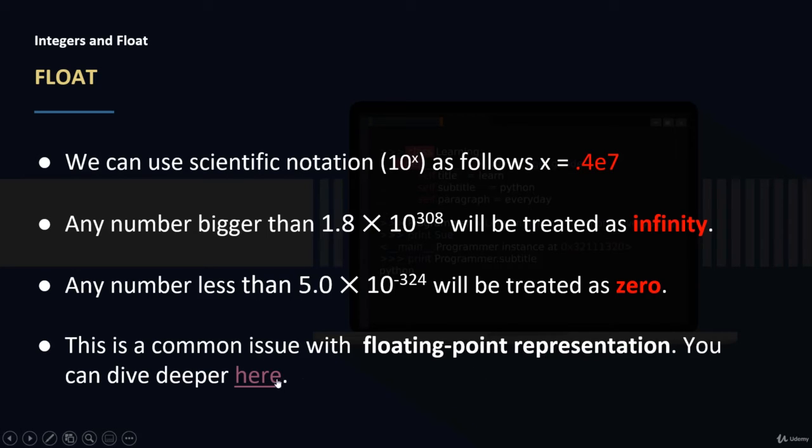This is a common issue called Floating Point Representation. We will go to this web page from Python documentation in an upcoming lesson in the next section to understand this problem better, because it will be related to one of the operators we are going to discuss. But for now, let's go to the code to understand how we can use integers and float and the type function.